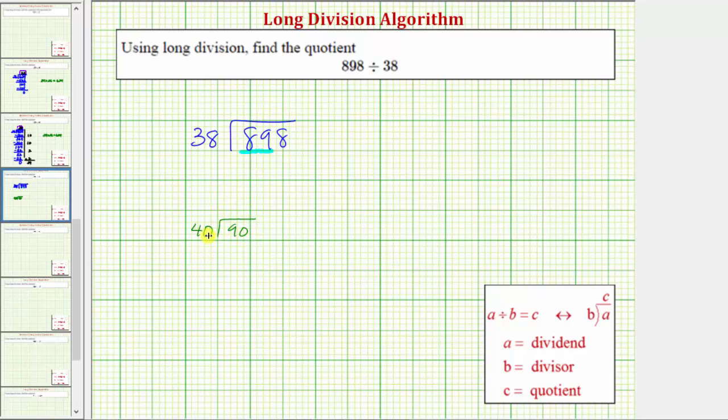Using this quotient, it's easier to recognize there are two 40's in 90, because 2 times 40 equals 80, and we have a remainder of 10. So because there are two 40's in 90, it's reasonable to assume there would be two 38's in 89.